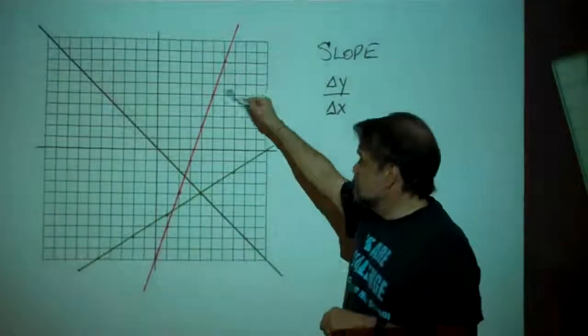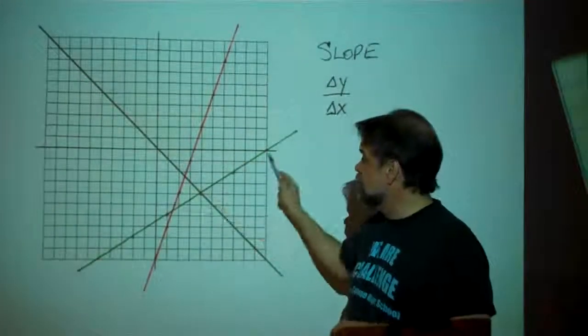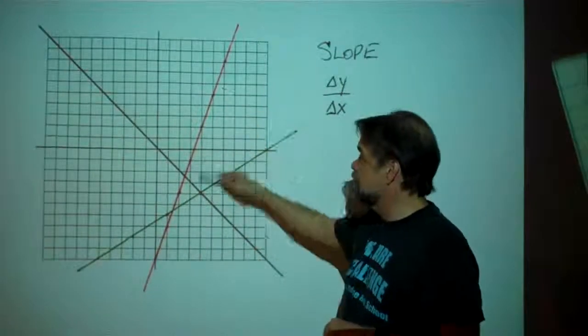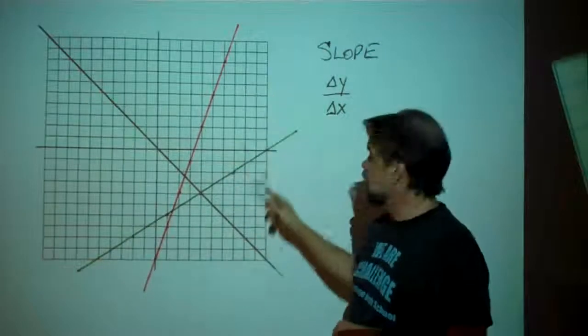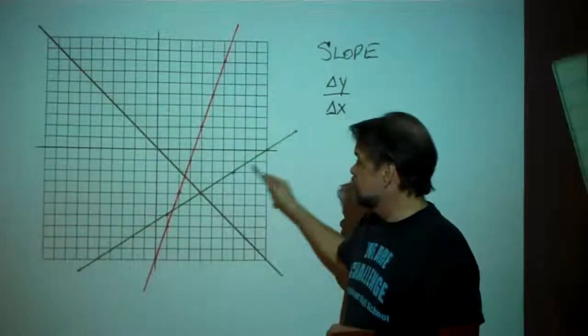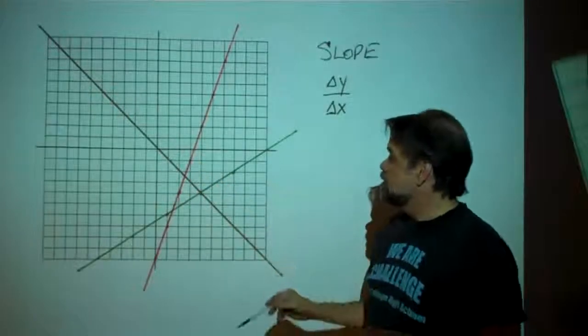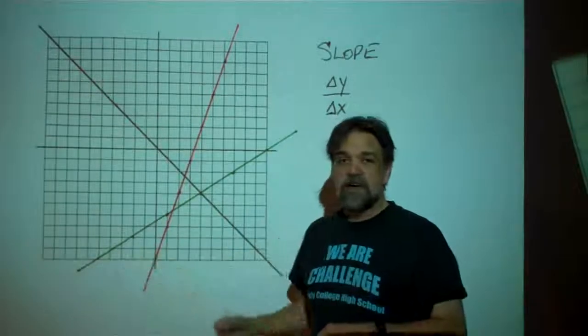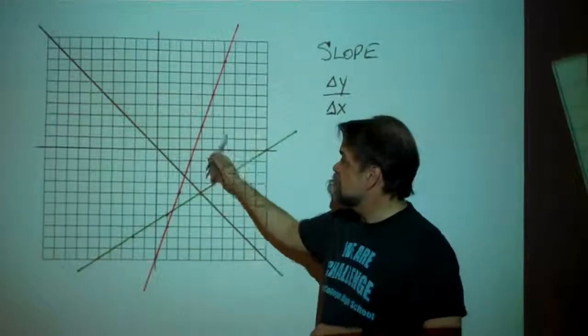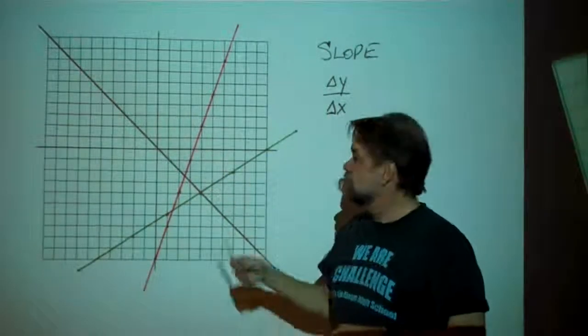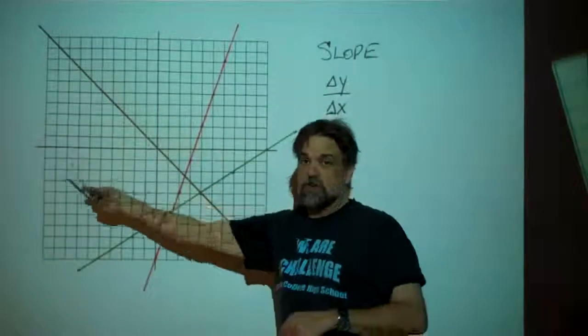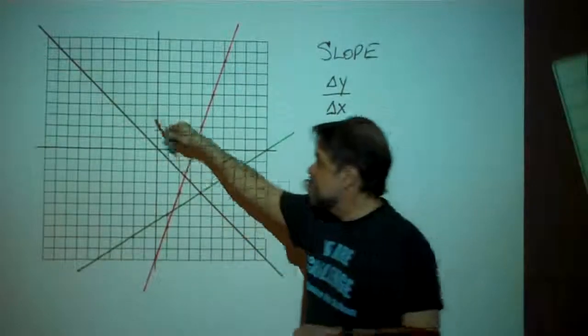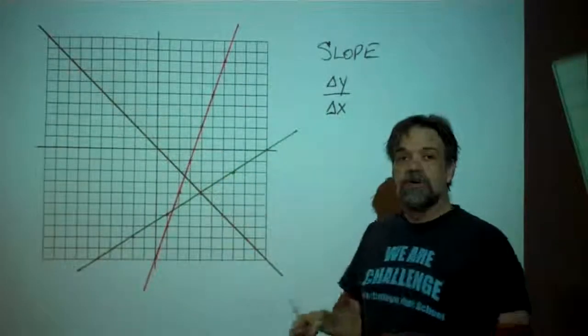This red line here, you can see that this red line is steeper than the green line is. When I talk about the red line, I'm talking about that one. When I talk about the green line, I'm talking about this one. When I talk about the black line, I'm talking about this one. This line is obviously steeper than this one is, and in mathematics, we say that it has a higher slope than this line does. This line, as you'll see as we go from left to right, is heading downhill instead of uphill, and so this line has a negative slope.